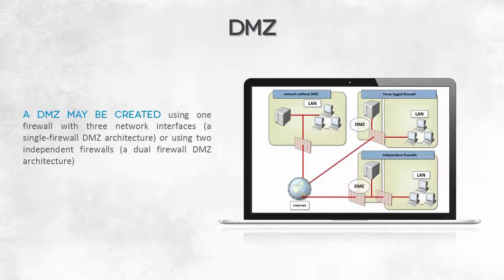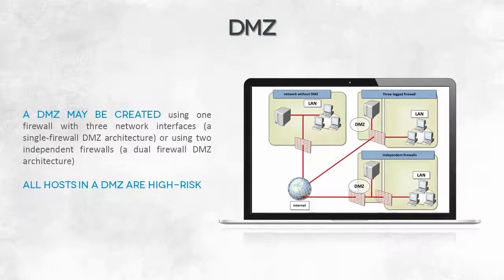Another way is to have two adjacent firewalls with the Demilitarized Zone between them. The rules that separate the DMZ from the internet are less restrictive than the rules set on the firewall between the DMZ and the local network.